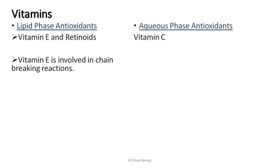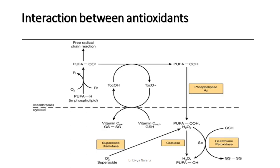Antioxidant vitamins include vitamin C, vitamin A, and vitamin E. Most free radical scavengers are antioxidants — compounds that neutralize free radicals by donating a hydrogen atom with its one electron to the radical, and are themselves oxidized in the reaction. They include vitamin E (lipid soluble), vitamin C (water soluble), carotenoids, and flavonoids.